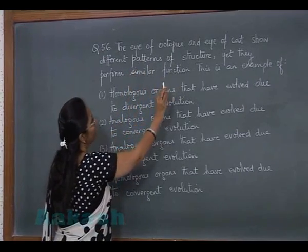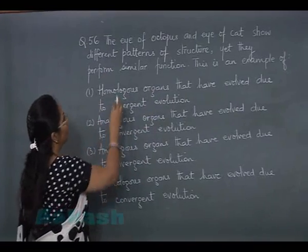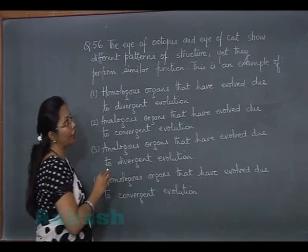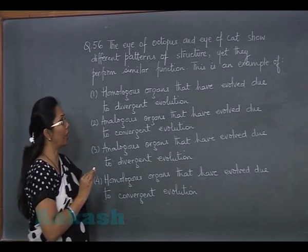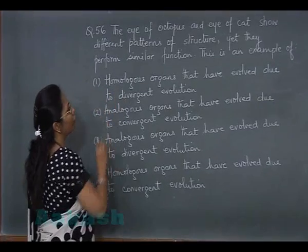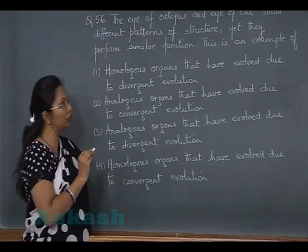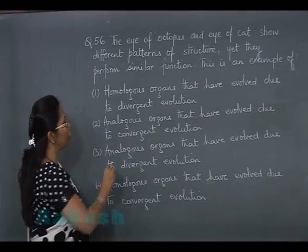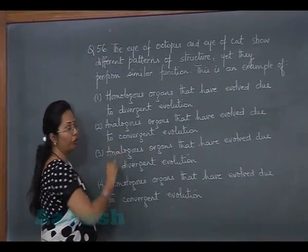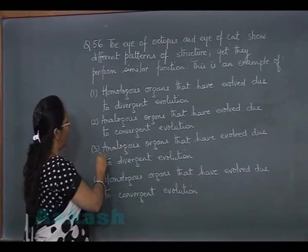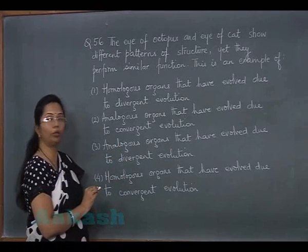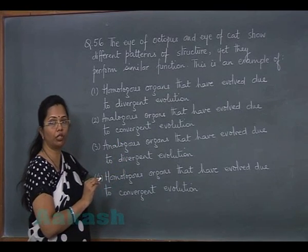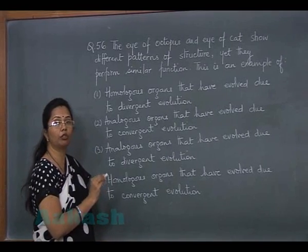Question 56: the eye of an octopus and the eye of a cat show different patterns of structure yet perform similar functions. This is an example of analogous organs. Option 1 states homologous organs evolved due to divergent evolution — this cannot be the answer. Option 2 states analogous organs evolved due to convergent evolution — this appears correct. Option 3 says analogous organs due to divergent evolution, but analogy leads to convergent evolution, not divergent.